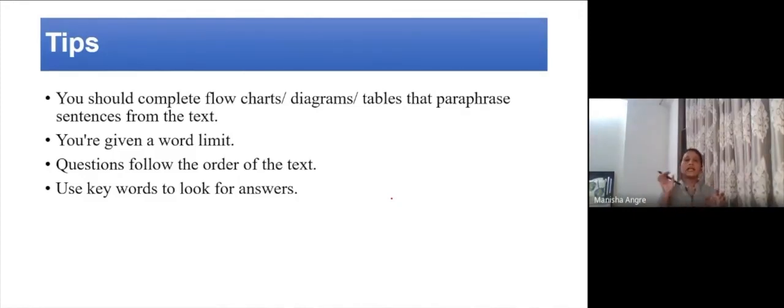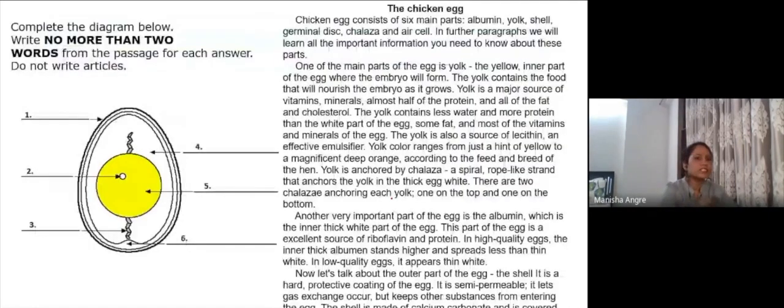With flowcharts and tables there may be paraphrasing included but no synonyms. So definitely you have to look for the exact word from the passage, but yes, there might be other parts of the sentence where you may require to know the keywords or synonyms. Again, you are given a word limit, questions follow the order of the text, and use keywords to look for your answers.